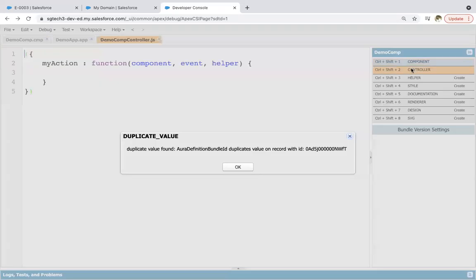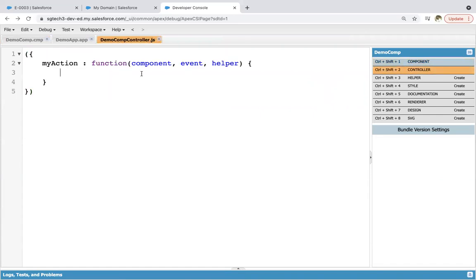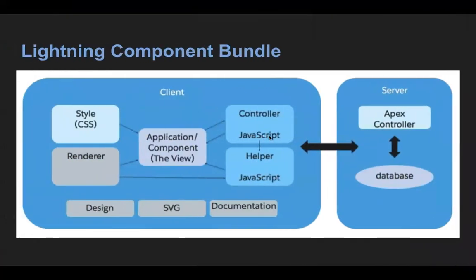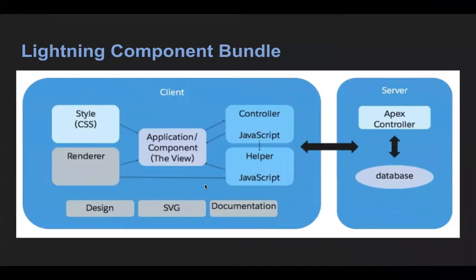Clicking on the controller opens it as a file — for example, 'DemoCompController.js'. Here you write back-end logic implemented in JavaScript. Both the controller and helper are written in JavaScript, so those two are managed in JavaScript. For styling with CSS, the style file is available — clicking on it shows a .css file where you can write CSS-related code. In later modules we'll see how to use the controller, helper, and style. The renderer, design, SVG, and documentation files each have their own separate purposes, which will be explained in detail in the next slide.